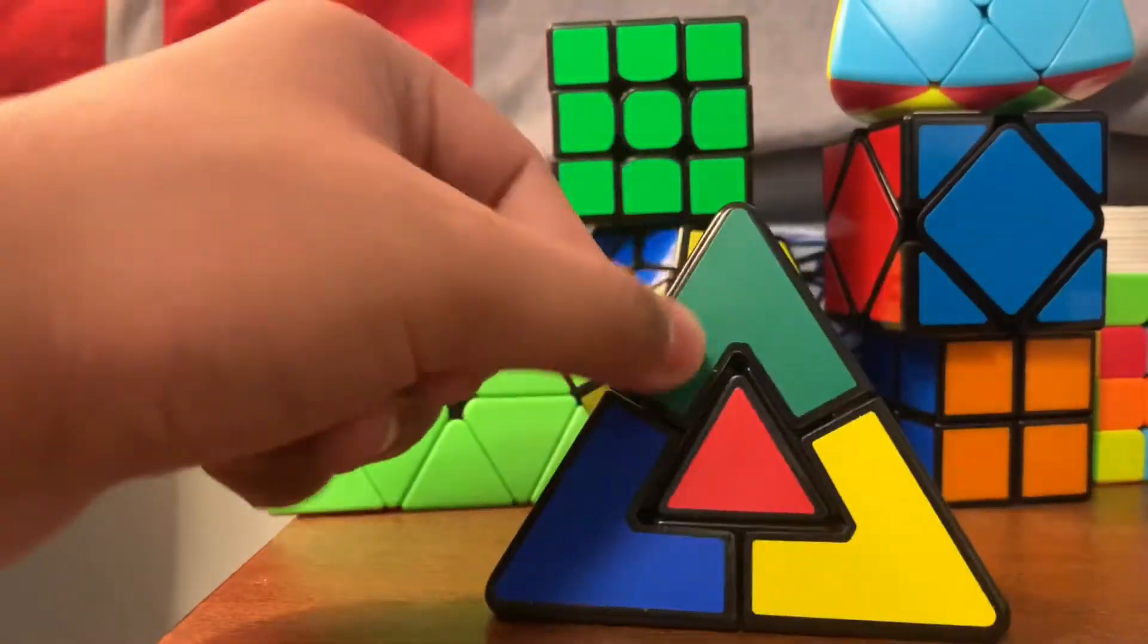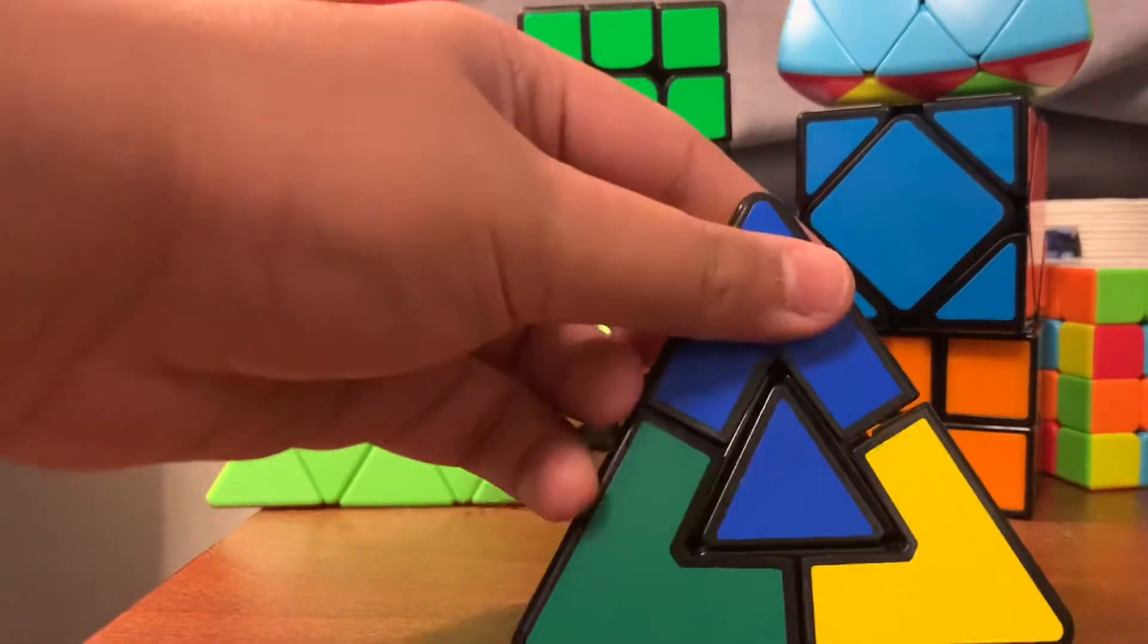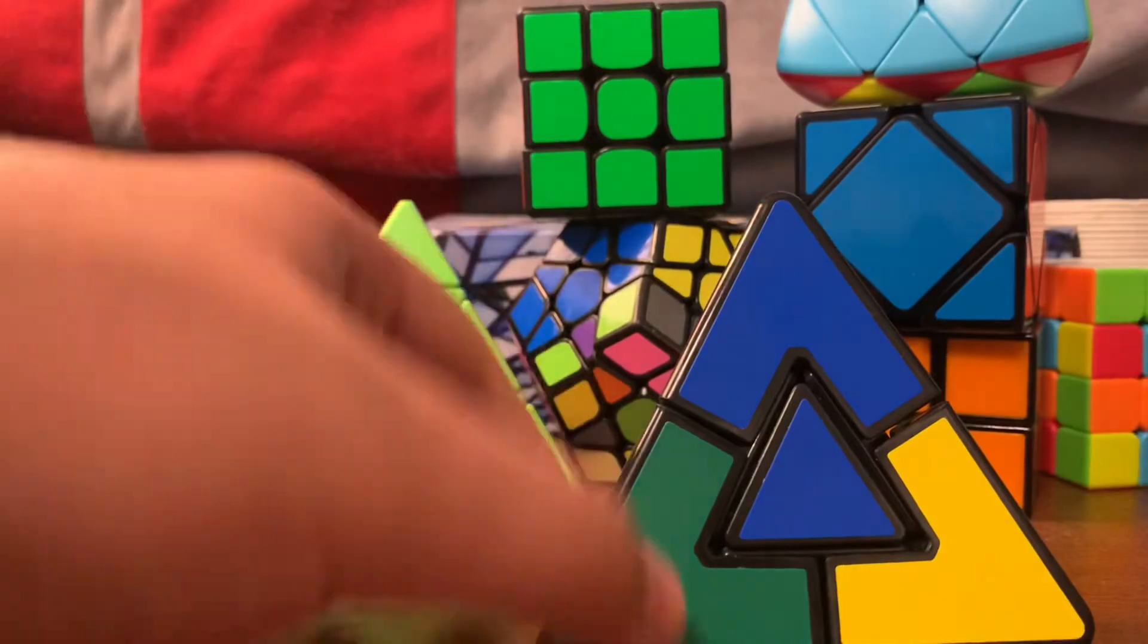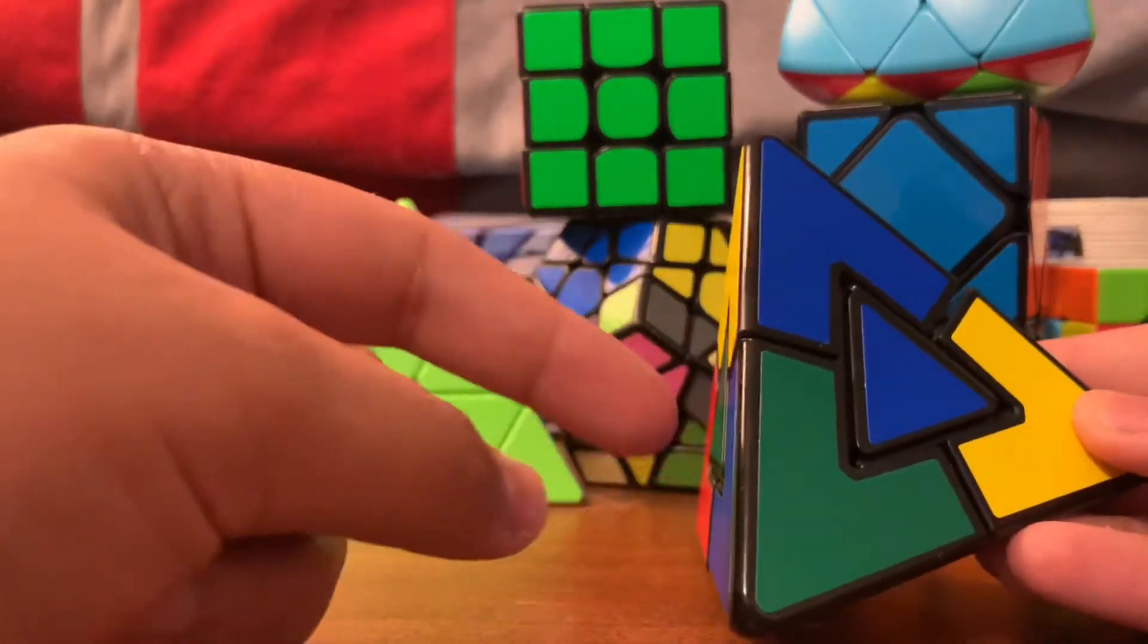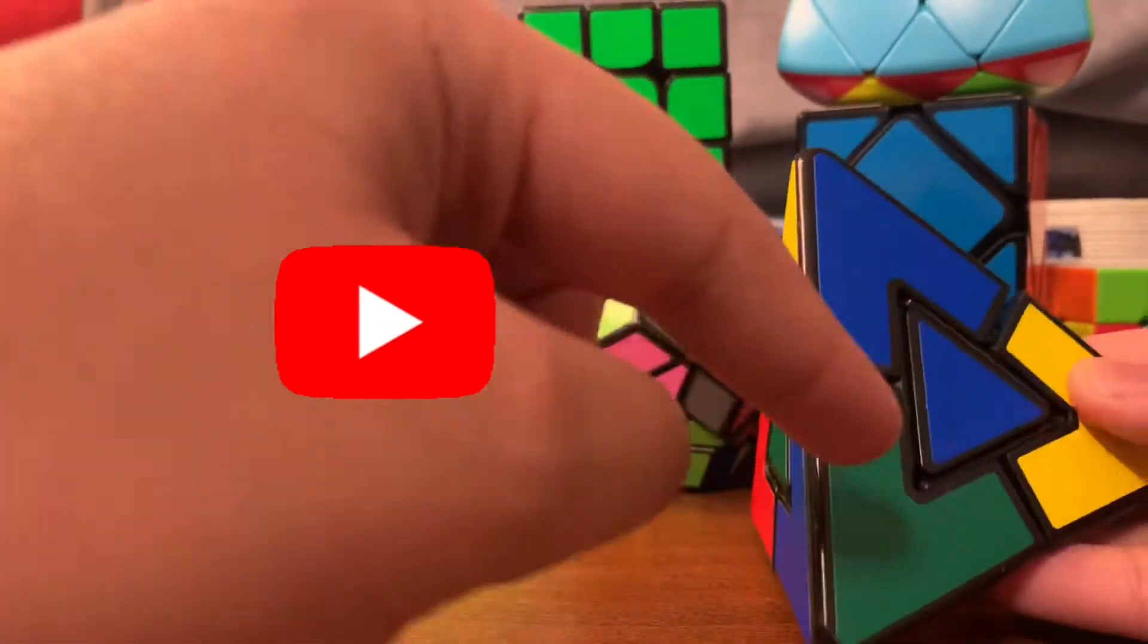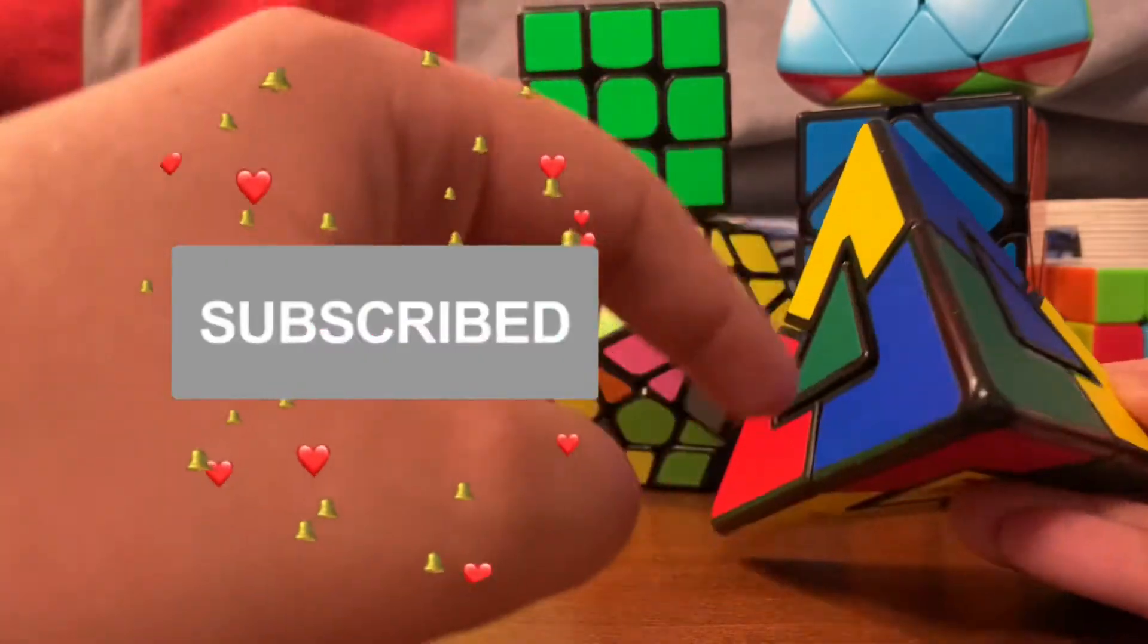Before starting the cube, we have to take any corner piece. A corner piece is one which has three colors, just like so: blue, blue, green, and red. It doesn't matter which color it is; we can even start from here or there. For now, I'm starting from here.